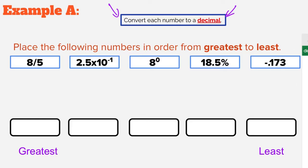The easiest thing to turn them all into is decimals. You could turn them all into percents or fractions, but it's probably easier to compare them in decimal form. So we're going to start with 8 fifths. To convert that to a decimal, we divide the top by the bottom — numerator divided by denominator — and we get 1.6.